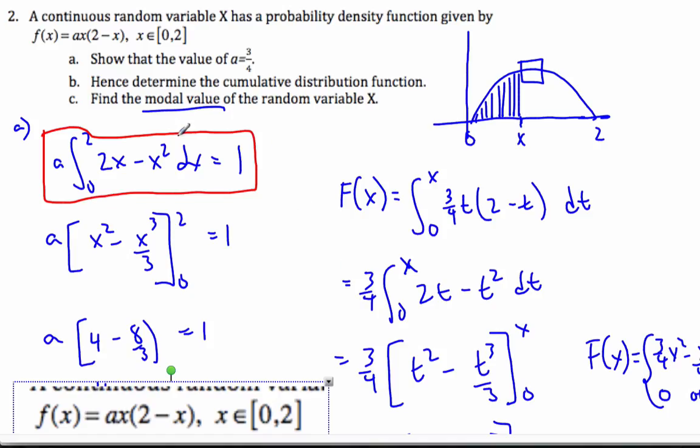So in doing this problem, we use the idea that the total area underneath the curve has to be 1. That will find us A. Once we have A, the cumulative distribution function means I'm going to accumulate the area from 0 all the way up to this X value, whatever this is. And then finally, the modal value is the maximum value of the graph.